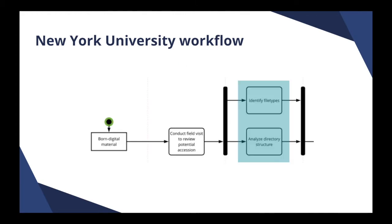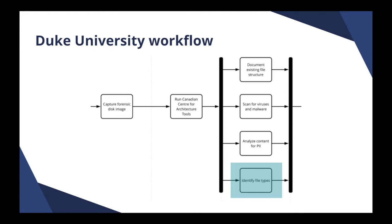In this example, also from New York University, file types are identified at the beginning when the archivist is conducting a field visit to review a potential accession. In this way, the file characterization step can be used to help aid in pre-appraisal of files before acquisition. However, this example from Duke University shows that file characterization can also occur later in the workflow, after the material has been transferred to the institution and a forensic disk image has been captured. There is no evidence that one of these workflows is better in practice than the other. The order of born digital archiving steps are configured based on local needs and practices.